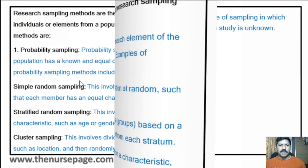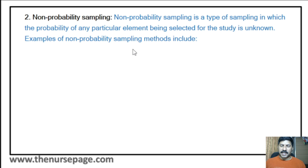Non-probability sampling means the chance of being selected is unknown. Non-probability sampling is a type of sampling in which the probability of any particular element being selected is unknown. The first type is convenience sampling — it involves selecting individuals according to the researcher's convenience: whichever group is easily available, the researcher selects that group as a sample, such as students in a particular class or shoppers at a mall.